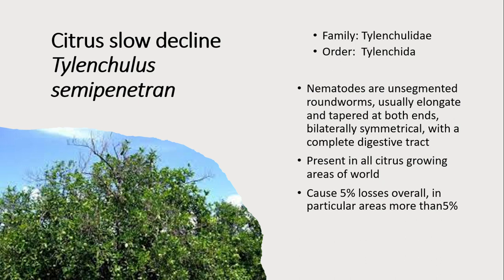Slow decline of citrus is caused by Tylenculus semipenetrans, also known as the citrus nematode. It belongs to the family Tylenchulidae and order Tylenchida. These nematodes are present all over the world wherever citrus is grown.